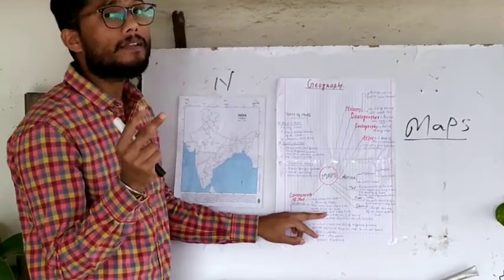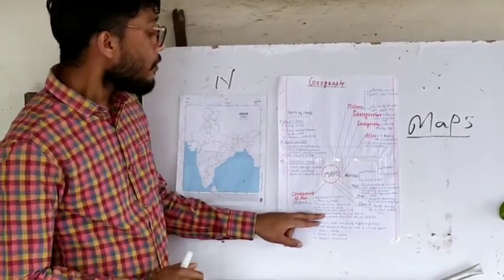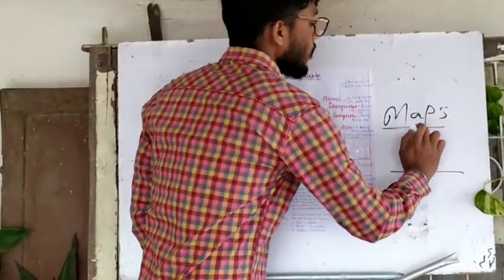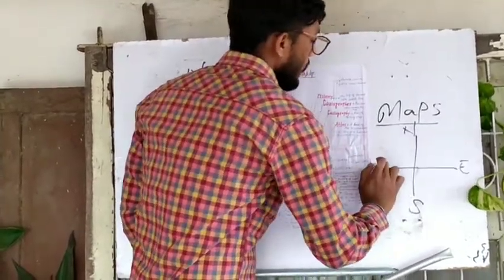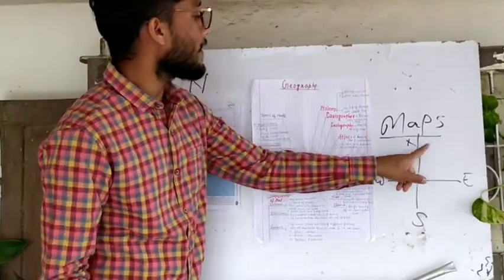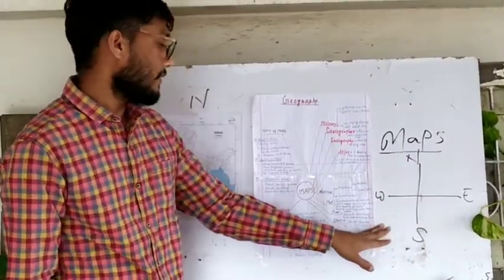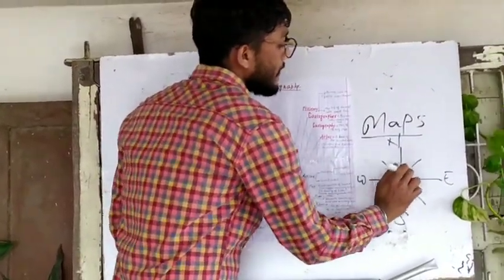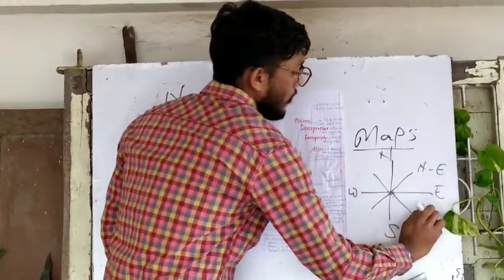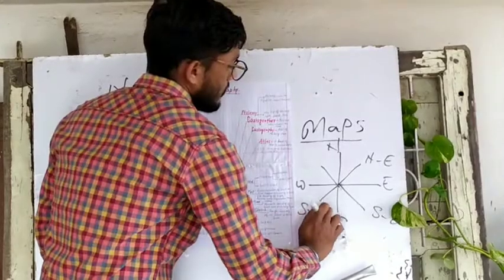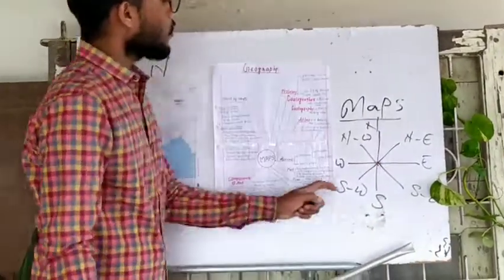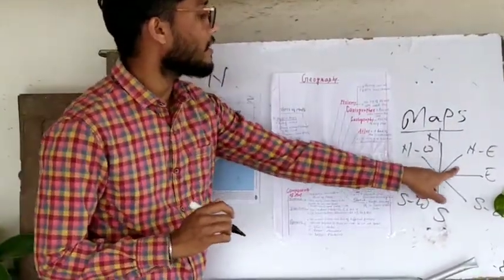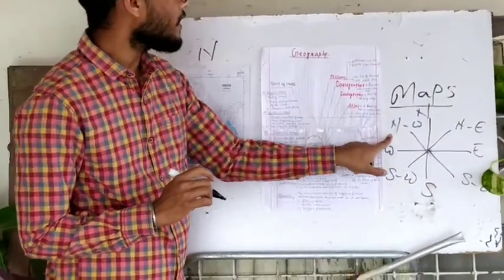For direction: there are mainly four cardinal directions — north, south, east, and west. These four directions are known as cardinal directions. The second type is intermediate directions — northeast, southeast, southwest, and northwest. So there are four main cardinal directions and four intermediate directions.